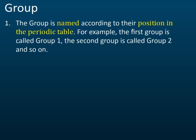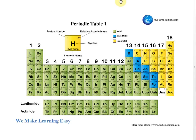The group is named according to its position in the periodic table — the first column is Group 1, the second is Group 2, and so on until Group 18. Similarly, rows are named Period 1, Period 2, Period 3, and so on.